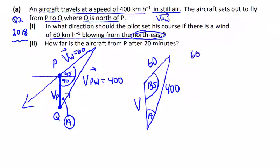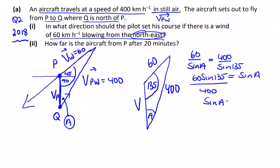We say 60 over sine A is equal to 400 over sine 135. So 60 sine 135 is equal to 400 sine A. Leave the sine A there, divide by your 400, you get sine A to be 0.1061.